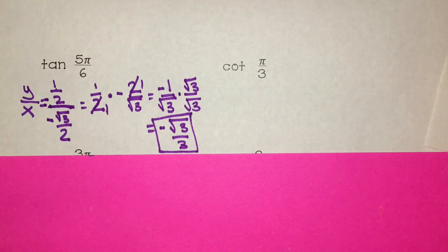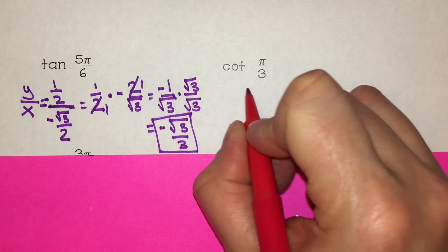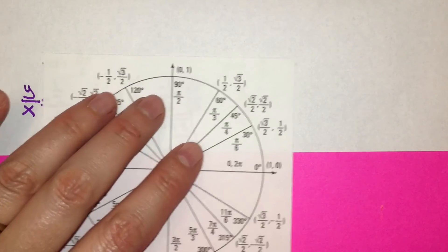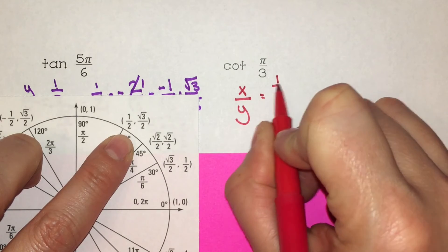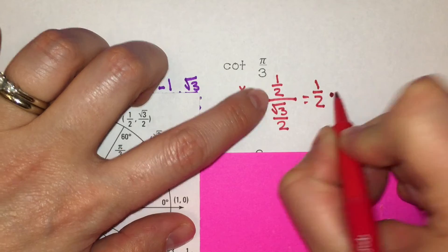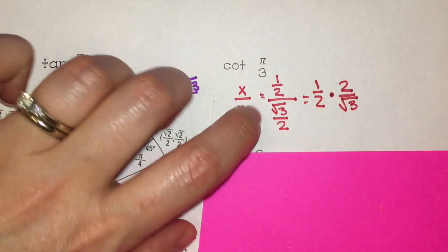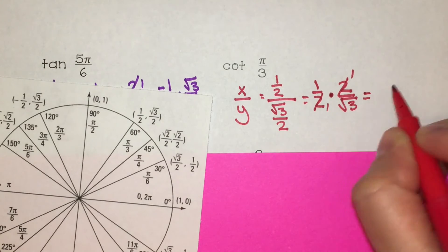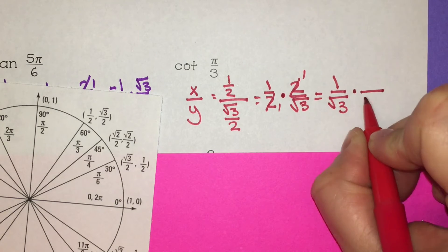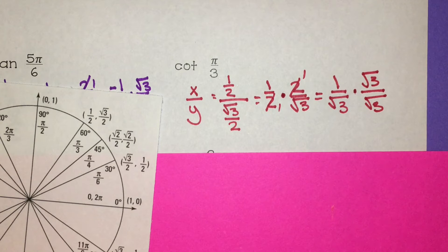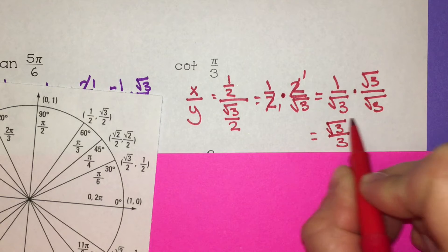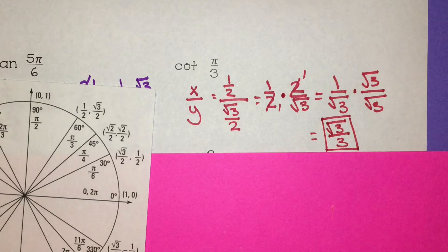We have cotangent of π over 3. Cotangent is x over y. At π over 3, the x value is 1 half over the y value square root of 3 over 2. Keep it, change to multiplication, flip it. The 2's cancel, and multiplying across gives 1 over square root of 3. Since you can't have a square root in the denominator, multiply by square root of 3 over square root of 3, giving square root of 3 over 3.